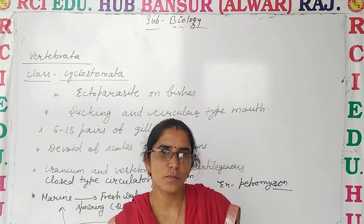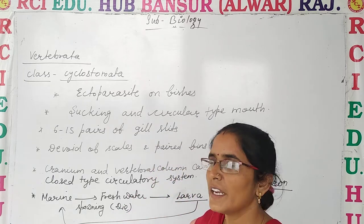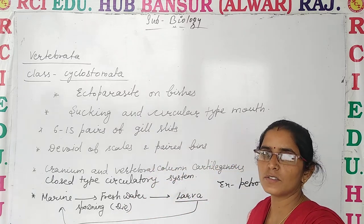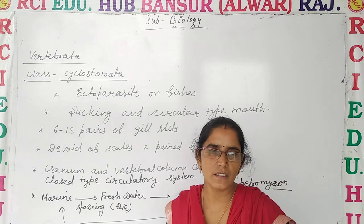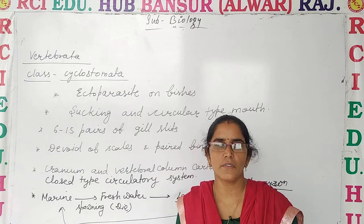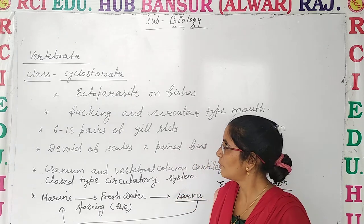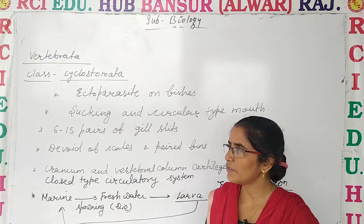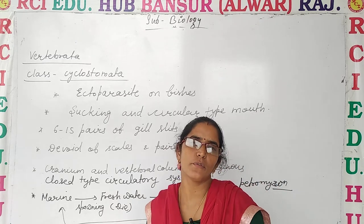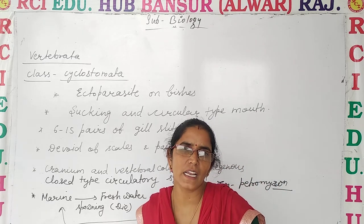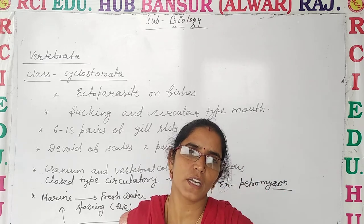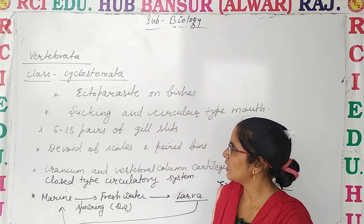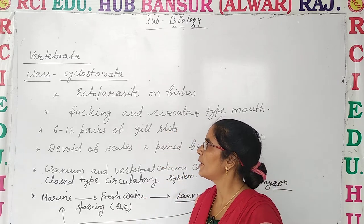Hello students, welcome to another online video of RCA Education. Welcome — let's continue class 11th chapter number 4, Animal Kingdom. Before this, we discussed about vertebrata and the classification of vertebrata. So now let's discuss about the class Cyclostomata.